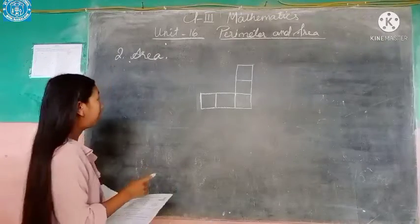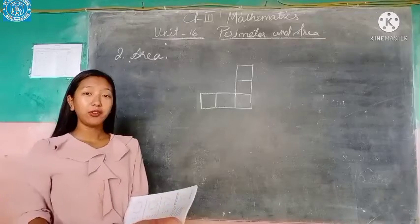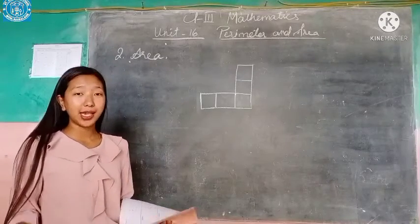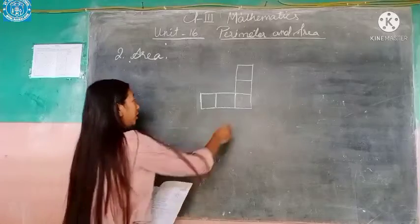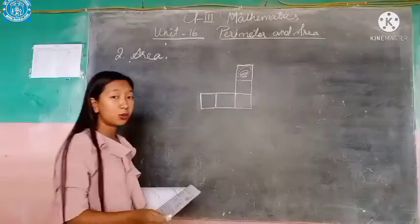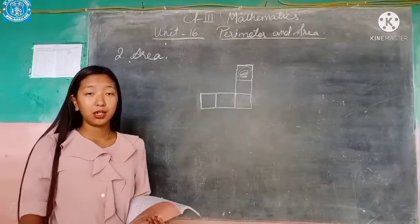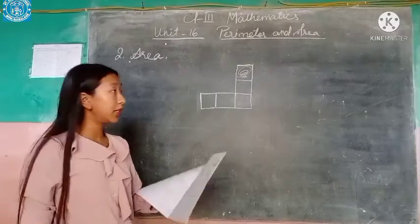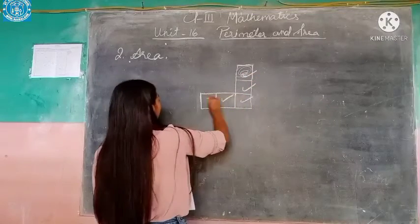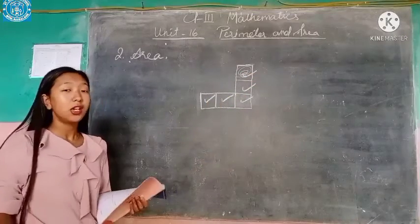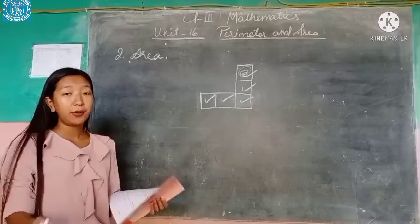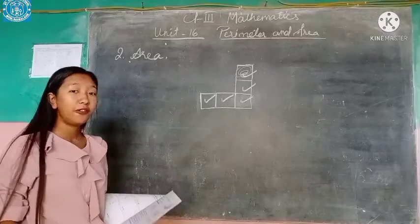Now let's move on to area. The amount of space that a shape covers is called area. The amount of the shape that is covered by the squares is called area. So let us find out how many squares are there in this shape. We have 1, 2, 3, 4, 5 — so there are 5 squares covered in this shape. The area covered here is 5 squares.